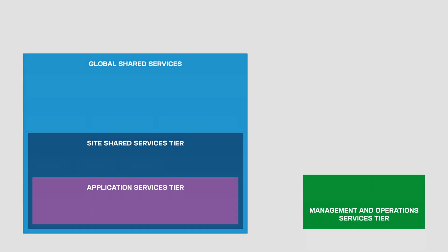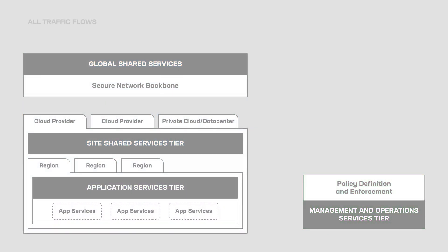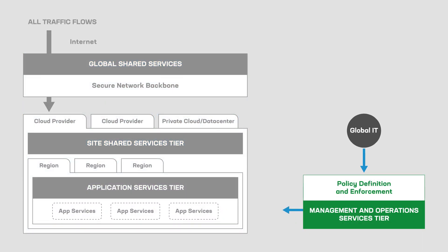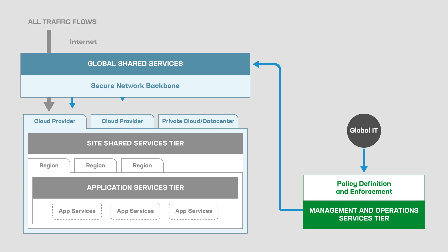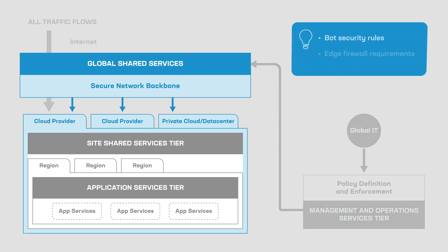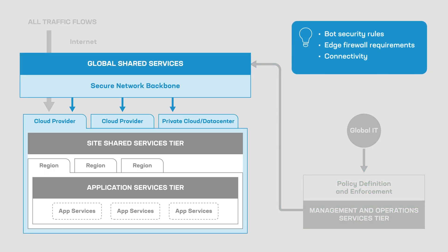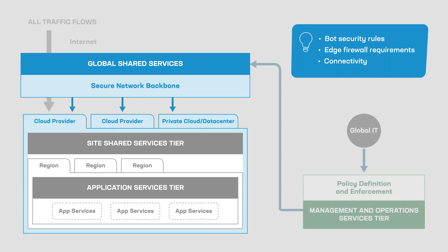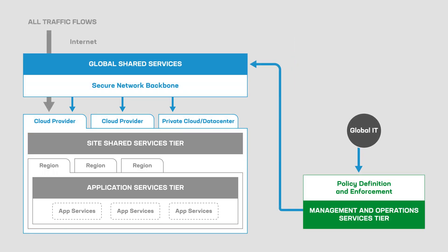Start by deciding which services and controls you need at each tier. At the global tier, you can deploy general policies and standardized infrastructure requirements that will be applied universally, across all sites and all applications.